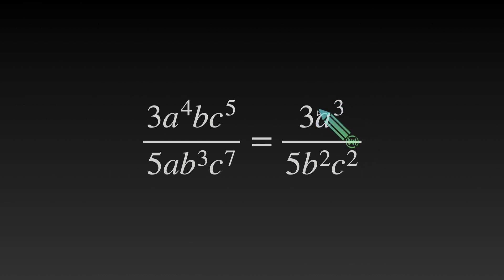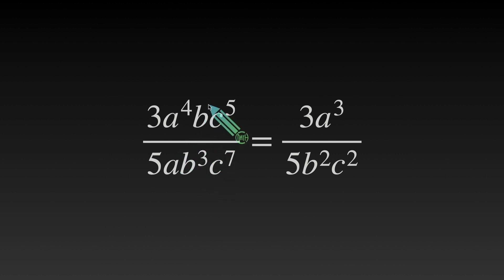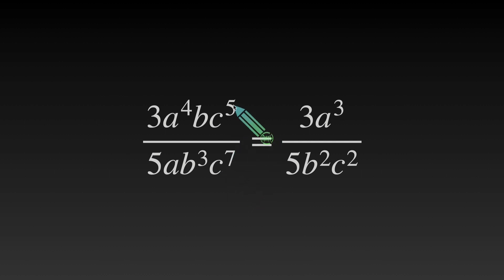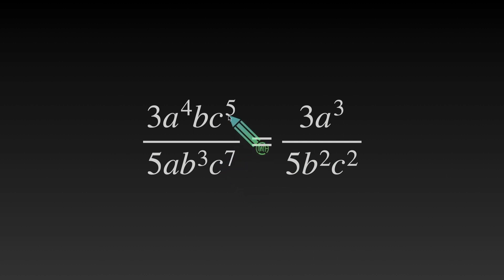Where is this a cubed in the answer? It is in the numerator because you had more a's at the top than at the bottom. Now let's look at our b's. We have b to the first and b to the third. Three minus one, we have b squared at the bottom because we had more b's at the bottom. Now for our c's — seven minus five — we have c to the second at the bottom because we had more c's at the bottom than at the top.